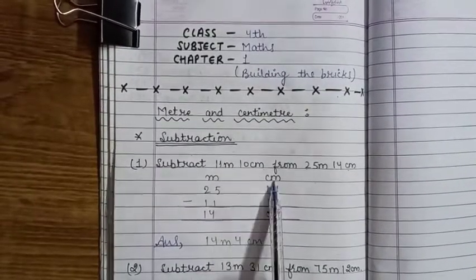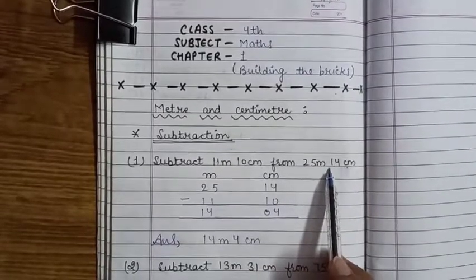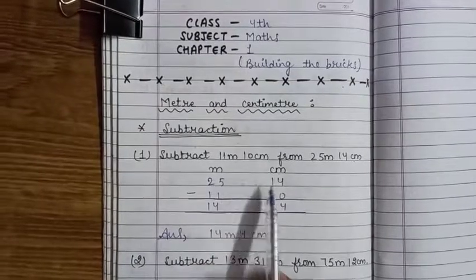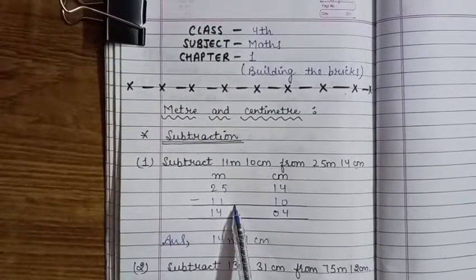Aapki bade measurement 25 meter hai to aap 25 meter 14 centimeter wali measurement upar likhenge aur chhoti measurement ko aap niche likhenge. Same aapne jaise subtraction ab tak seekha, aap simply subtraction ko karenge.